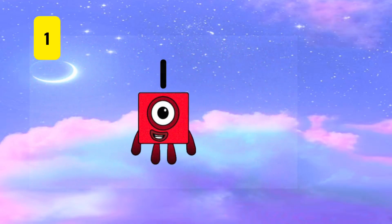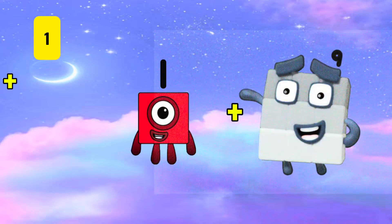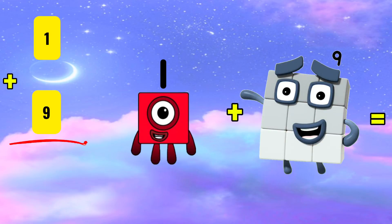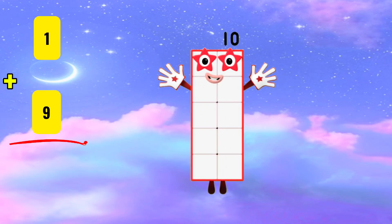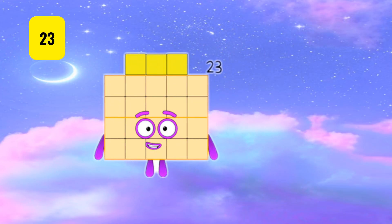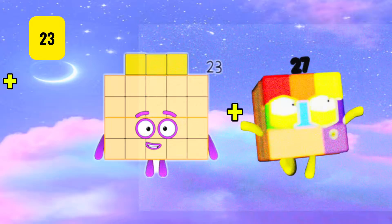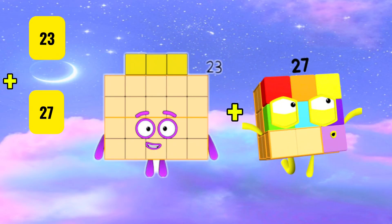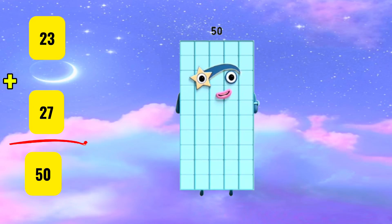1 plus 9 equals 10. 23 plus 27 equals 50.